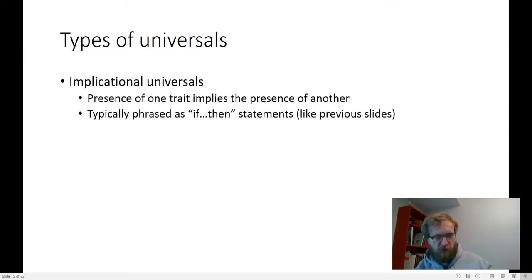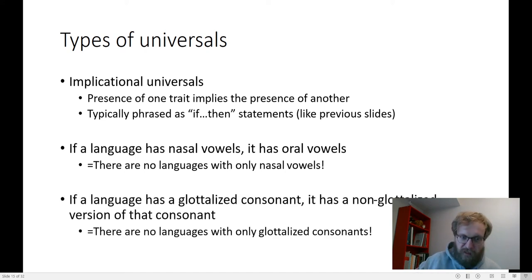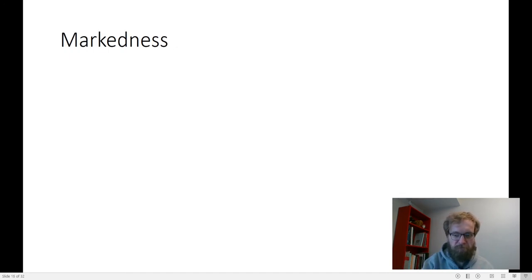Implicational universals are this sort of if-then statements. For example, it's a true fact that if a language has nasal vowels, then it'll also have oral vowels, an oral vowel version of that vowel. So that means that there's languages that have only oral vowels, and there's languages that have oral and nasal vowels, but there's no languages that only have nasal vowels. It's also the case that if a language has a glottalized consonant, then it'll also have a non-glottalized version of that consonant. That means there are no languages that only have glottalized consonants.